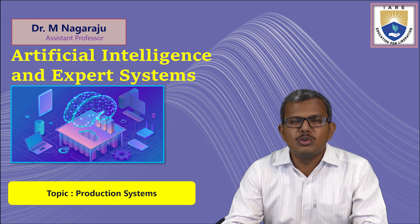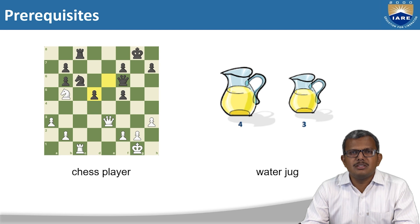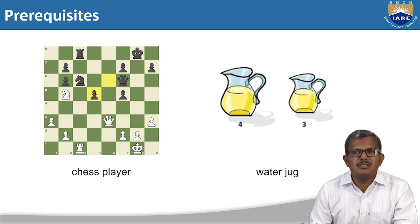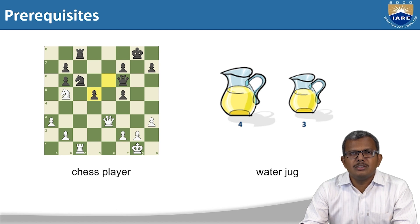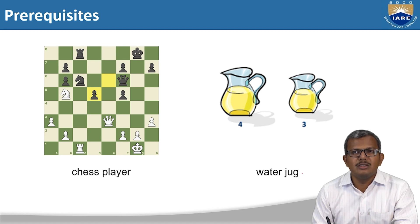In production systems, we discuss production rules and how they help the developer write AI programs efficiently, which are then fed into AI machines to exhibit intelligence. In the previous lecture, we discussed two important examples where production rules come into picture: the first is the chess playing game and the second is the water jug problem. We discussed their state space representations.